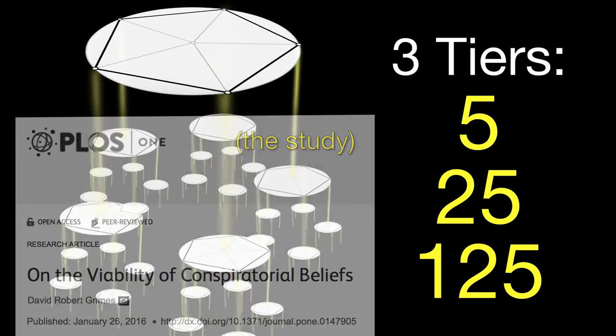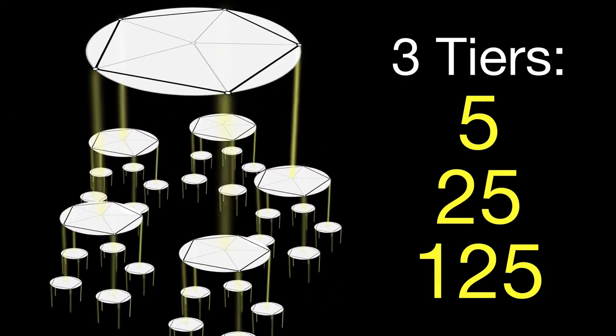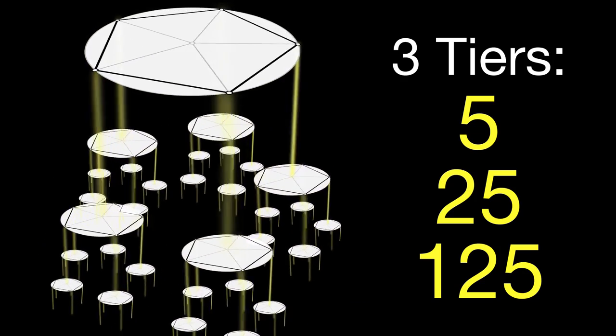Perhaps there is some decent behavioral science on our ability to keep secrets. An established metric, instead of just five, could use the number of all involved participants to estimate how many tiers of compartmentalization would be required to accomplish a given alternative theory.